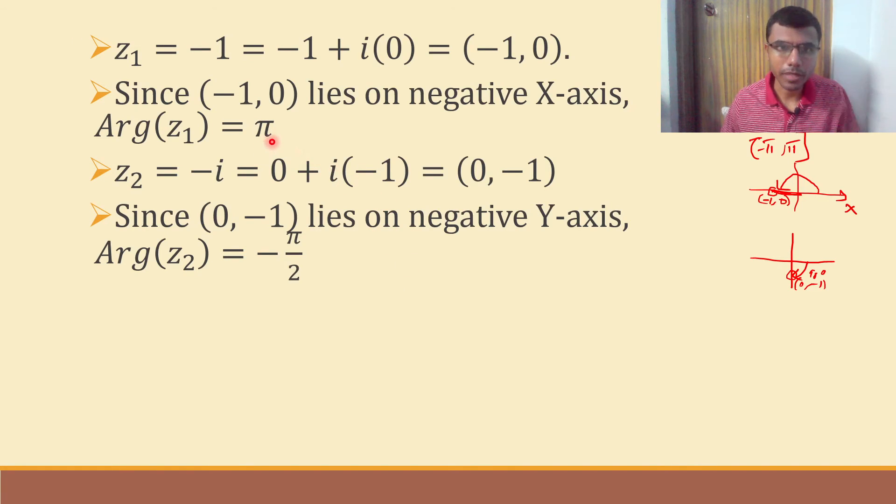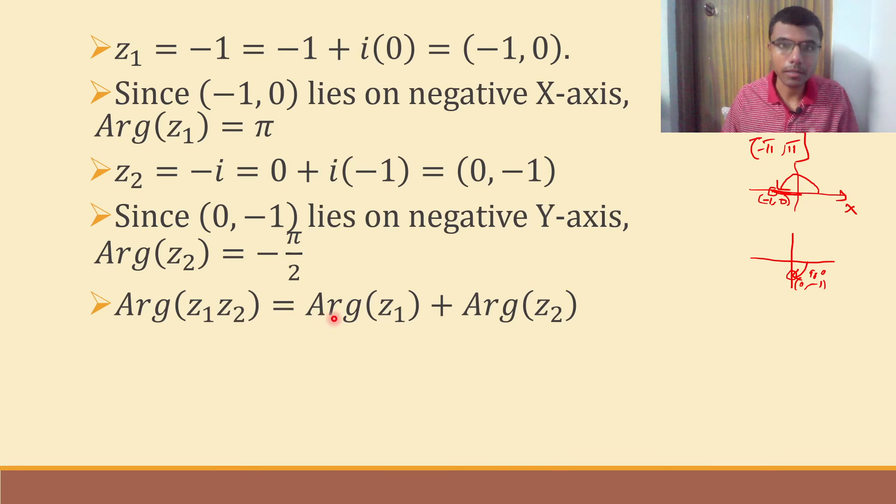So argument of z1 is pi and argument of z2 is minus pi over 2. Now argument of z1·z2 is nothing but argument of z1 plus argument of z2. That is something like a formula which you can remember.